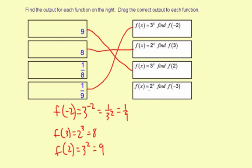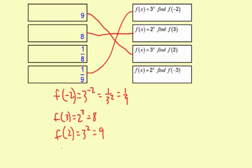f of x equals 2 to the x. Find f of negative 3. f of negative 3 is going to equal 2 to the negative 3, which is 1 over 2 to the 3rd, which is 1 eighth. So f of negative 3 is 1 eighth.